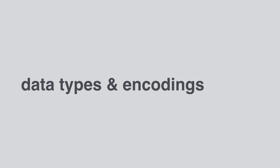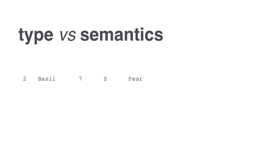So let's dive in: data types and encodings. The first thing is to talk about what's the difference between type and semantic. If I were to show you this row of data - 'two-BASIL-7S pair' - the question is, how do you interpret BASIL? How might you interpret BASIL? Any thoughts?